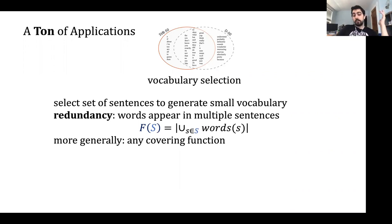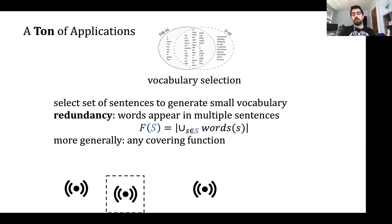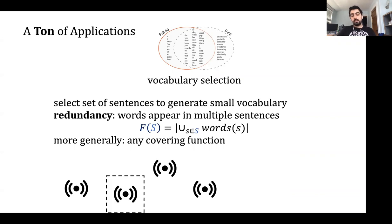Another example of this principle: suppose you have a bunch of sensors and want to evaluate how much information you gain from them. You have two sensors and gain some information. You add a new one and gain more, but if you already have an extra sensor, the information gain from the new sensor would be smaller than before. It's again about the union of things.